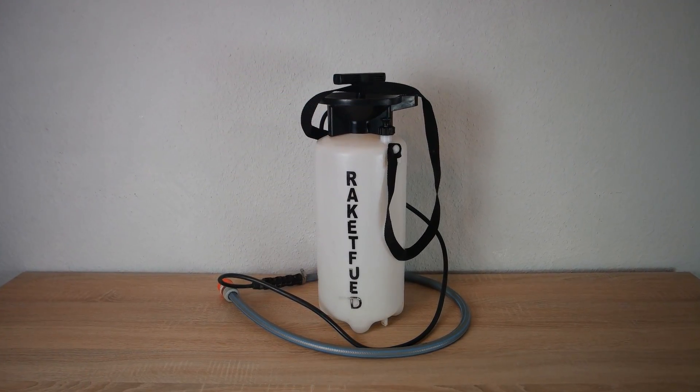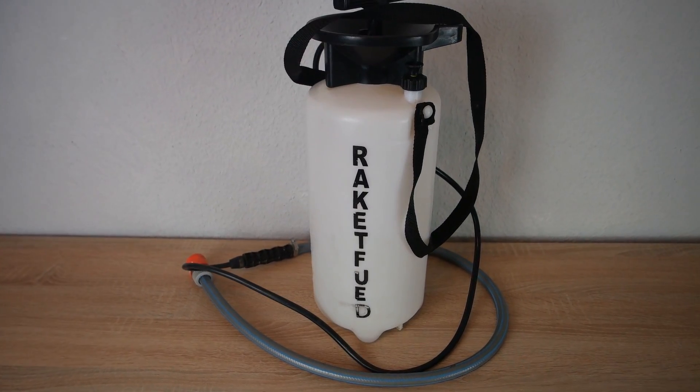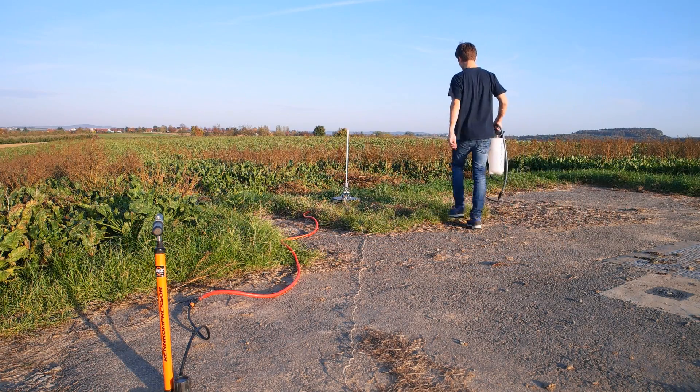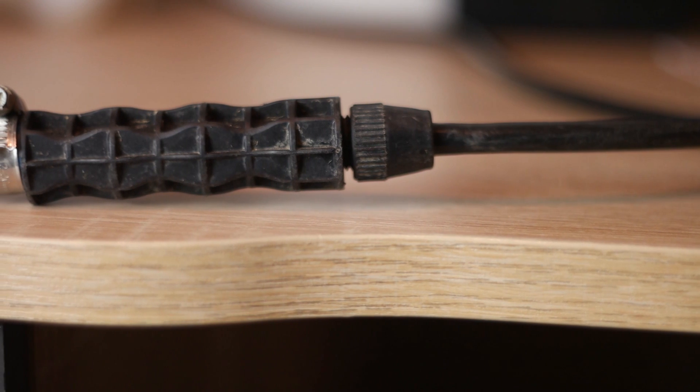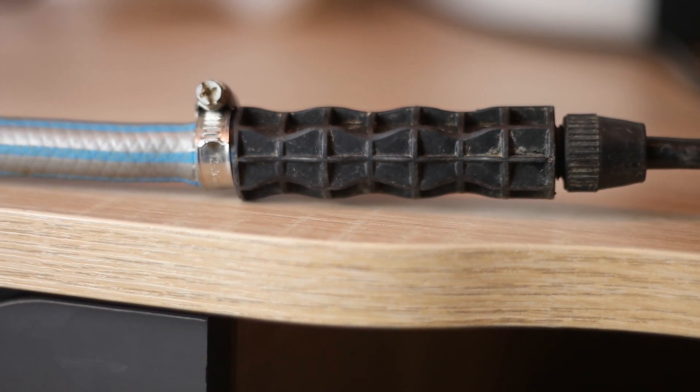The water filling system is a bit more complex, but it allows a comfortable filling of the rocket. We use a pressure sprayer of which the nozzle is sawn off. Instead, we have attached a garden hose to it using a hose clamp.